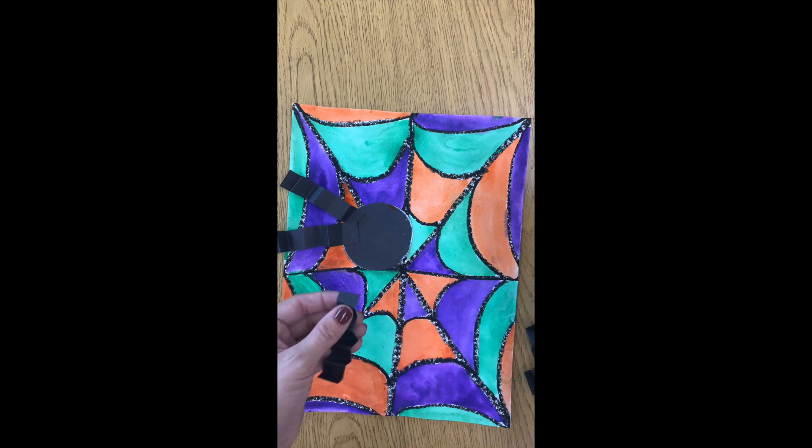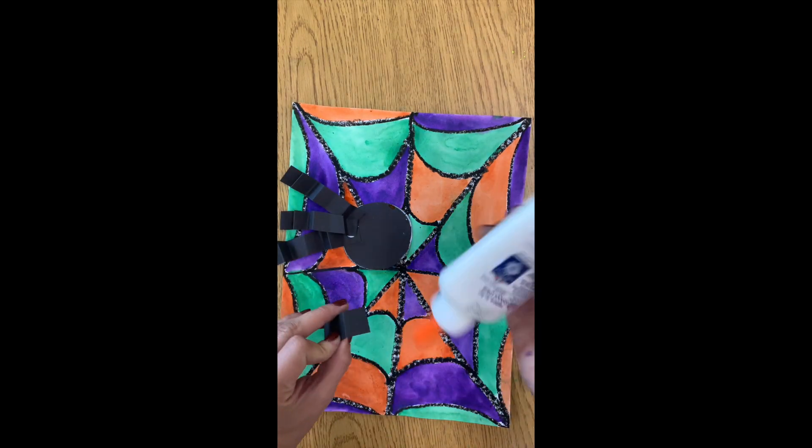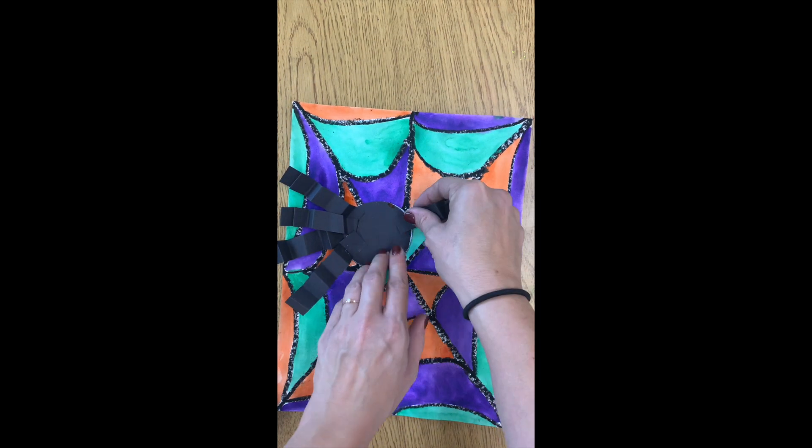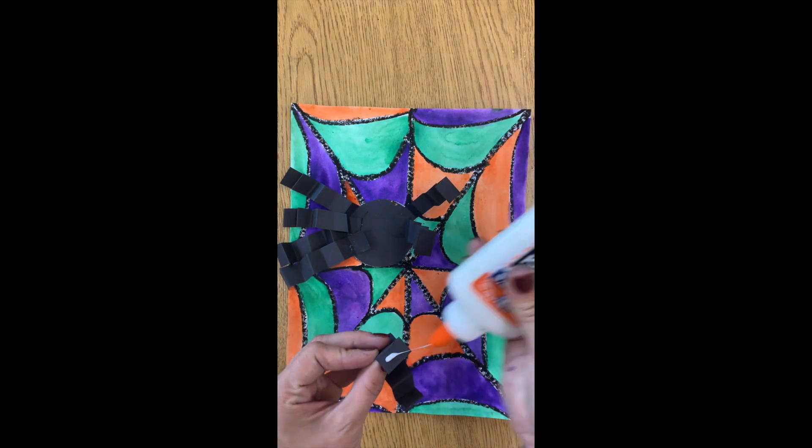I will do this for all of the legs, and then I will add a slightly larger dot of glue in the middle of the back of my spider. Then I will flip it over and glue it on.